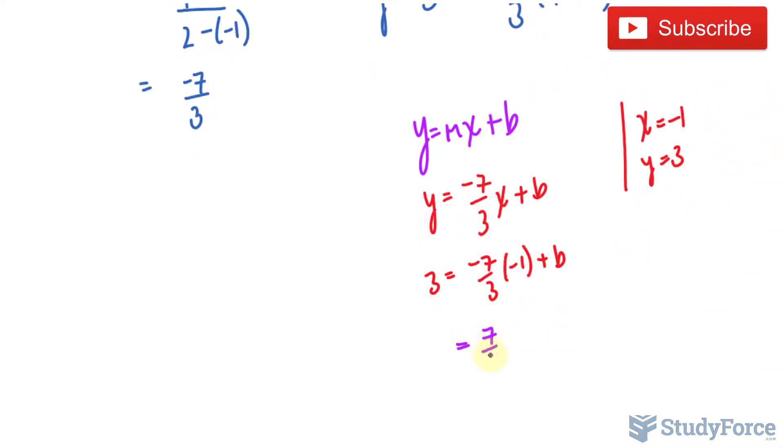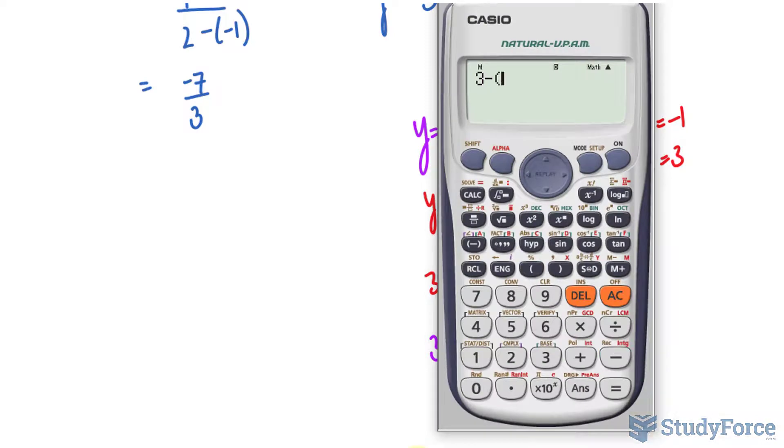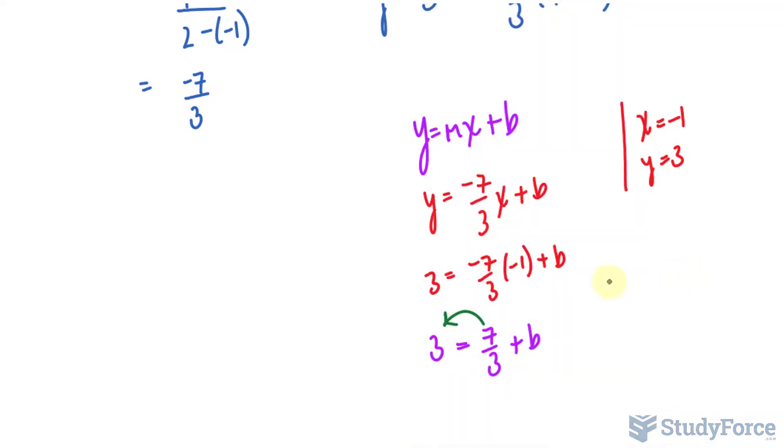This part becomes 7 over 3, it's no longer negative. Bringing that over, we have 3 minus 7 over 3, which is 2 over 3.